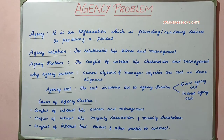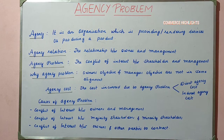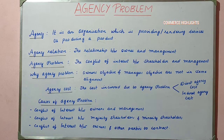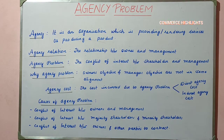The second cause is when there is any conflict of interest between majority shareholders and minority shareholders. Majority shareholders are those who hold a major stake in the organization, while minority shareholders hold a minor stake. When there is conflict of interest between them, it gives rise to an agency problem.